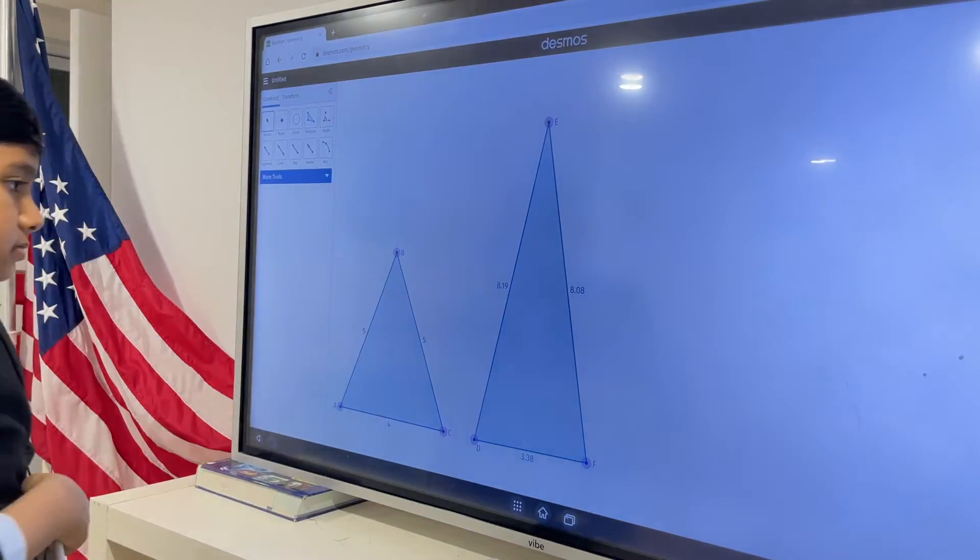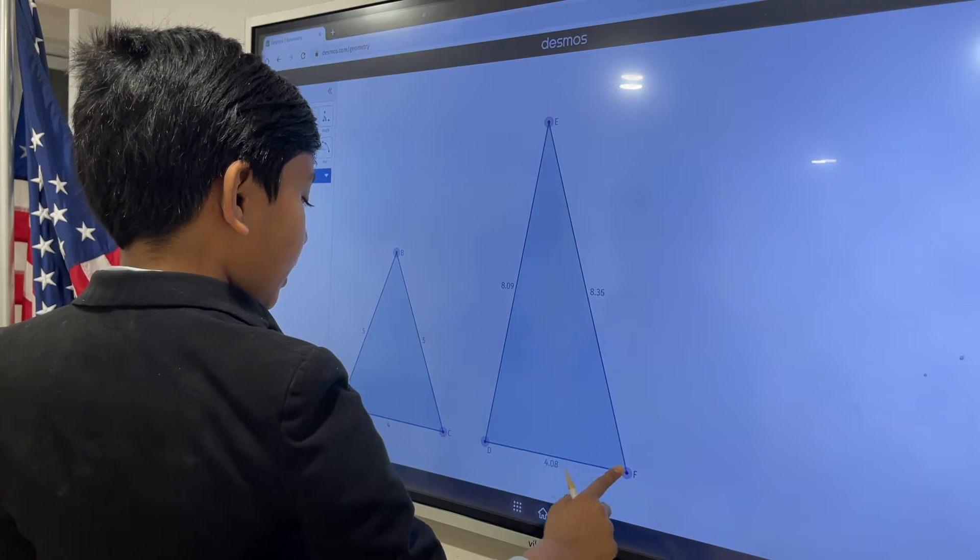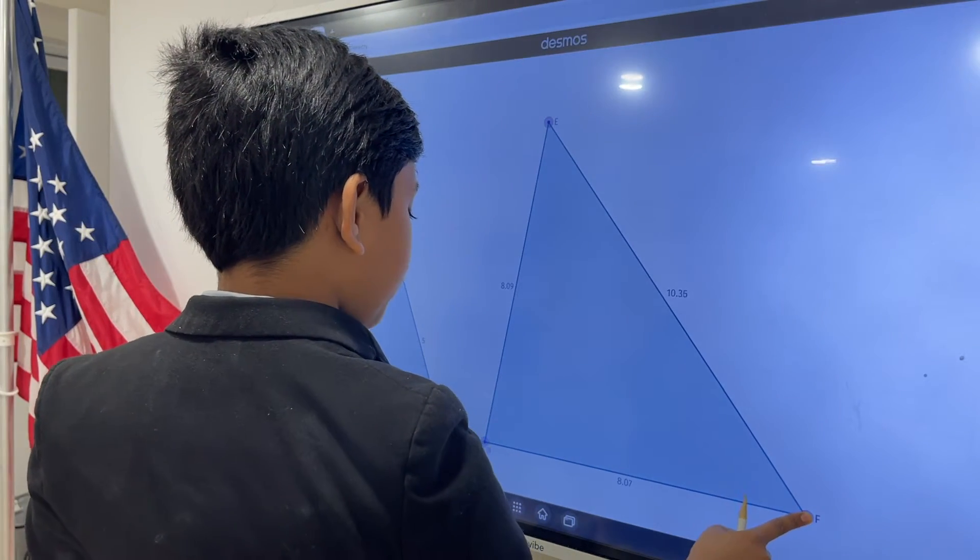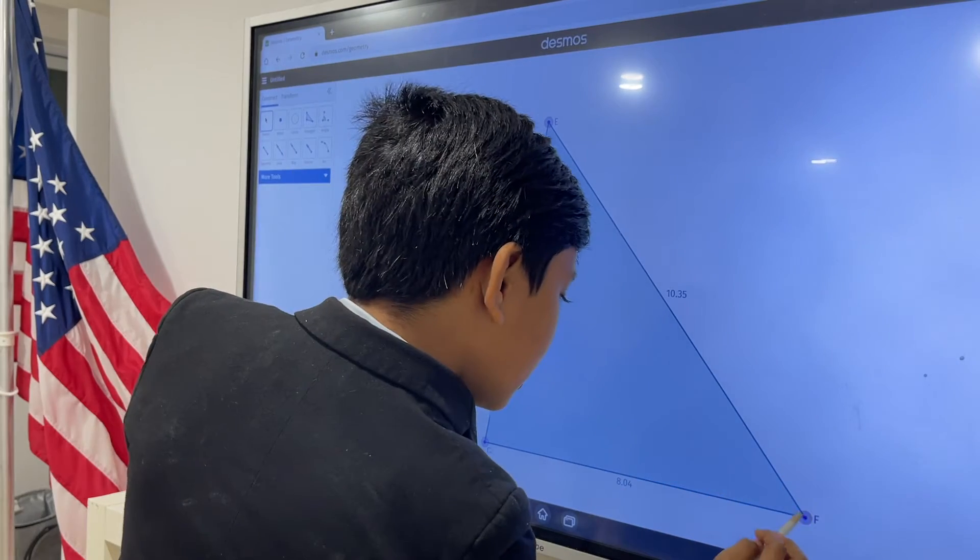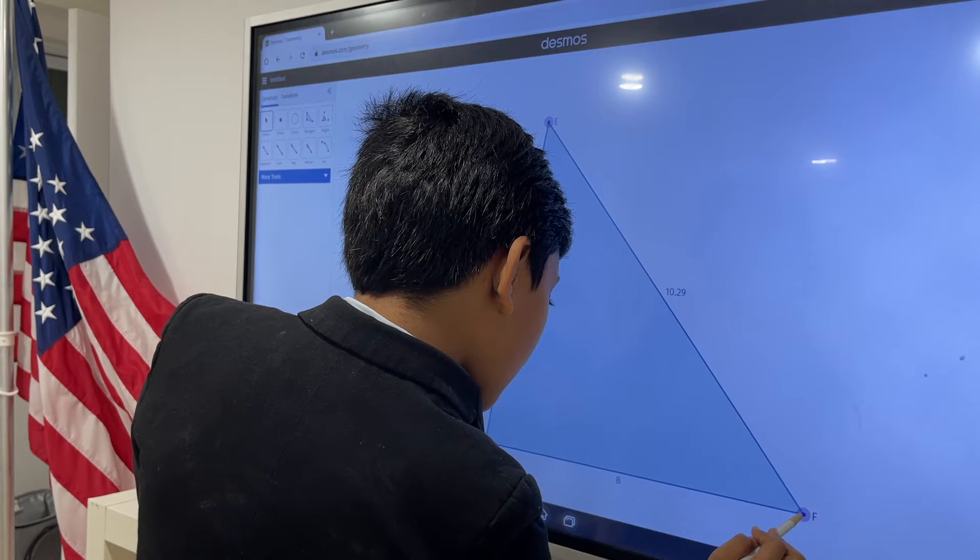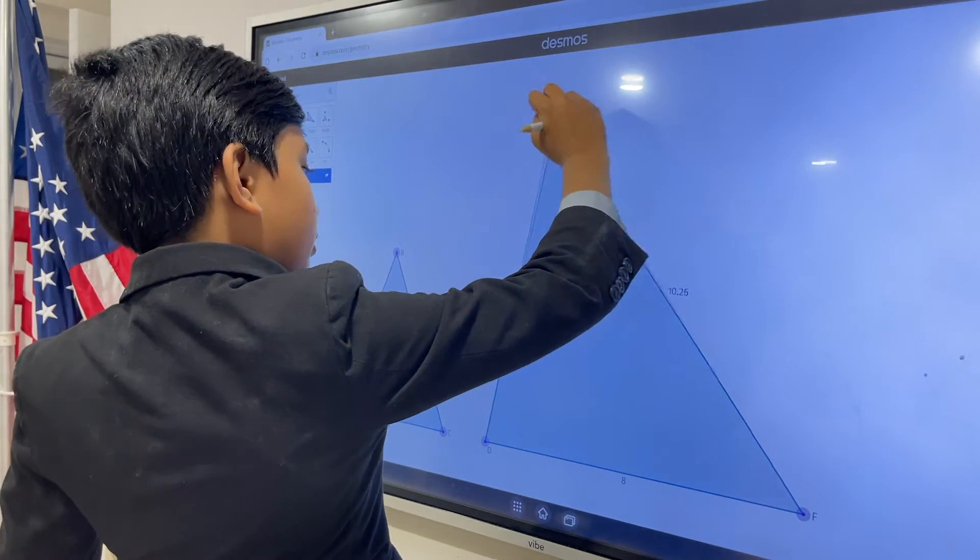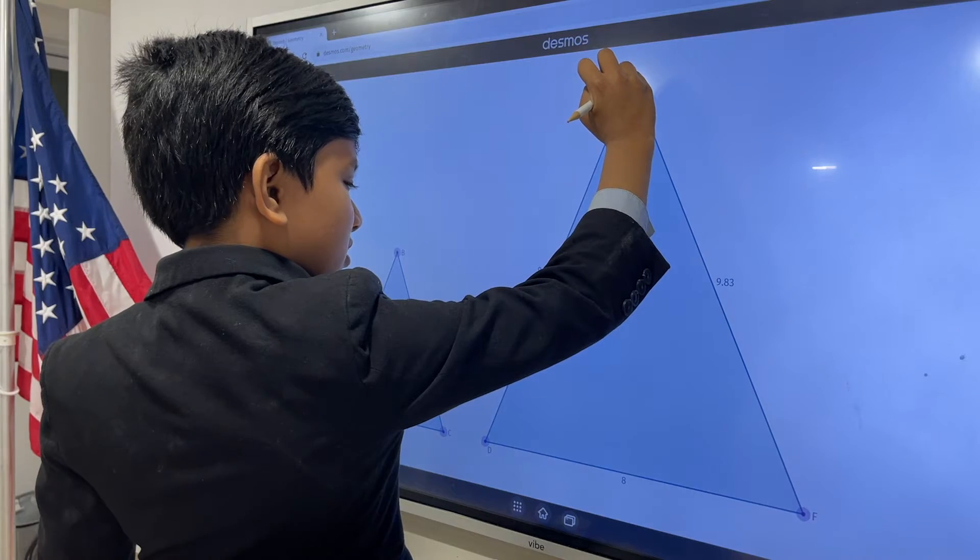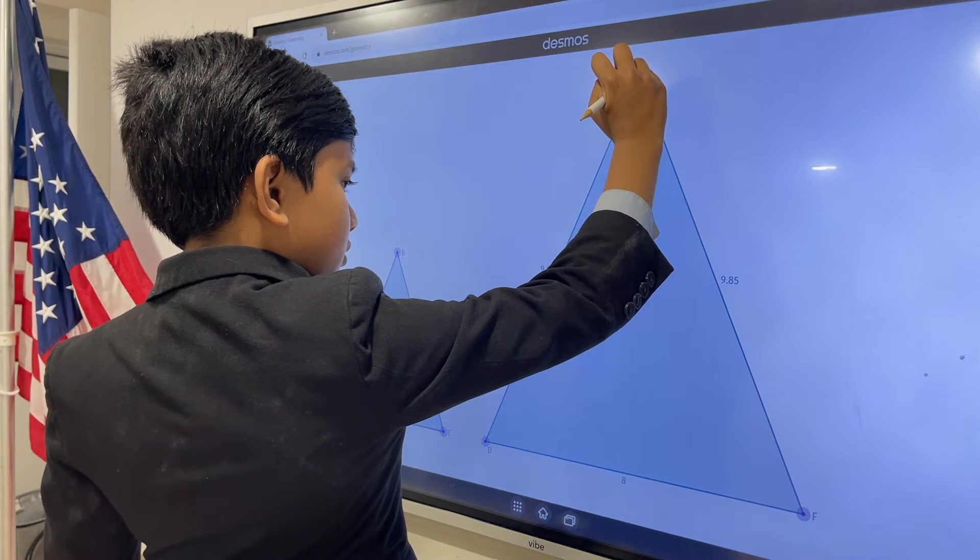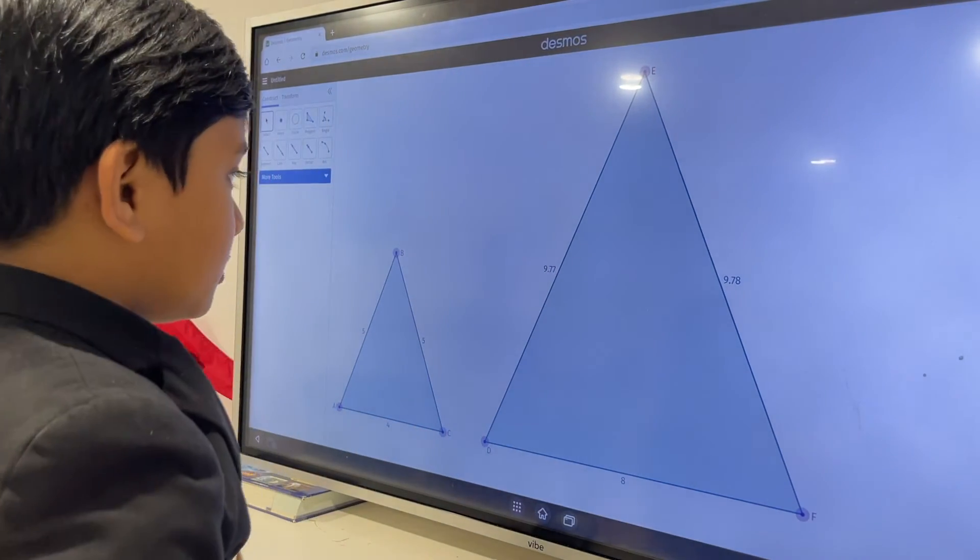And now what we're going to do is we're essentially going to take this side, make it four. Well, not really four, but we've got to size it up a bit more. I'm going to try and put this in the middle. Okay, that should be just enough.